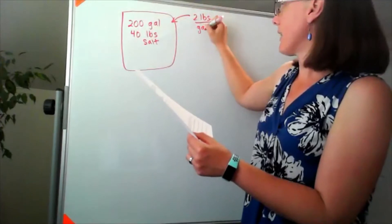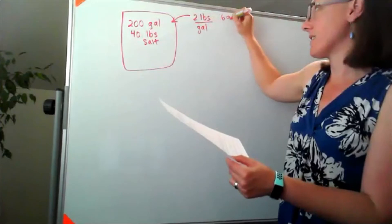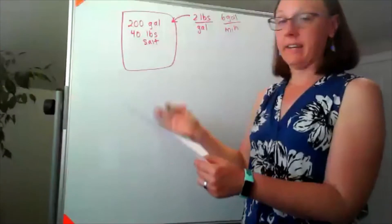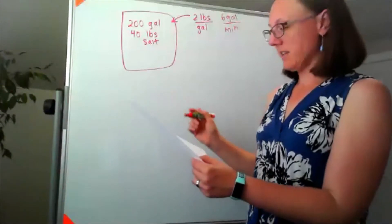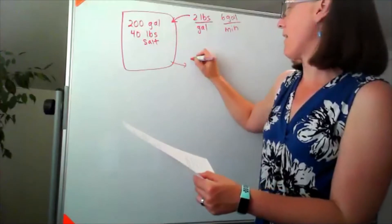The mixture is two pounds per gallon flowing in at a rate of six gallons per minute, and the mixture is well stirred and is flowing out at a rate of four gallons per minute.